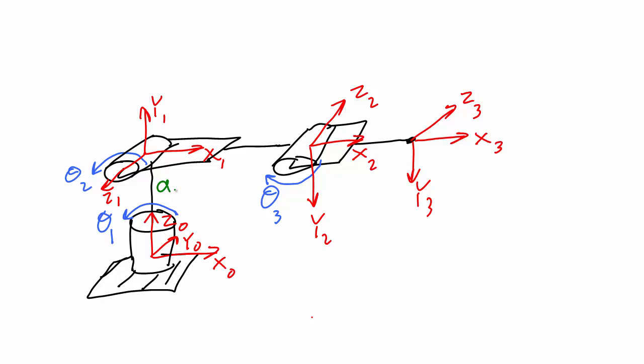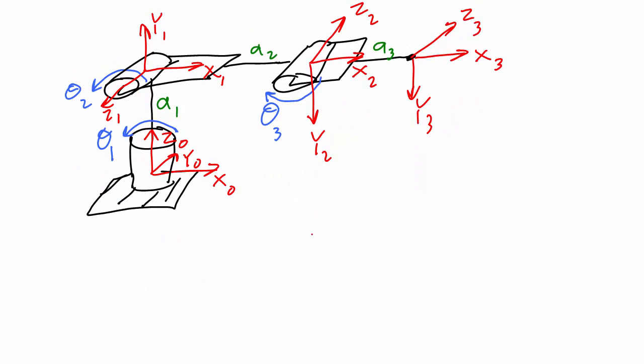I also need to label my link lengths. Now I have everything I need to find the homogeneous transformation matrix from frame zero to frame three. We have to start by finding the homogeneous transformation matrix between each adjacent frame — H01, H12, and H23 — and then multiply them together to get H03. I'm going to do that now, but I encourage you to try it on your own first, since you'll need to do things like this on the test and anytime you build your own robot. Pause the video now if you want to find the homogeneous transformation matrix yourself before I give you the answer.